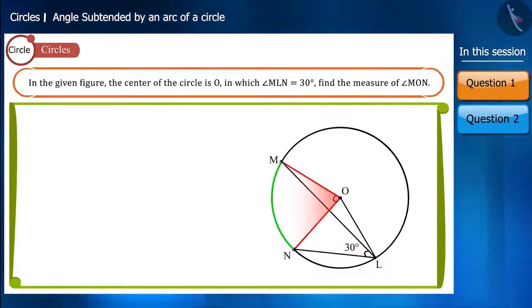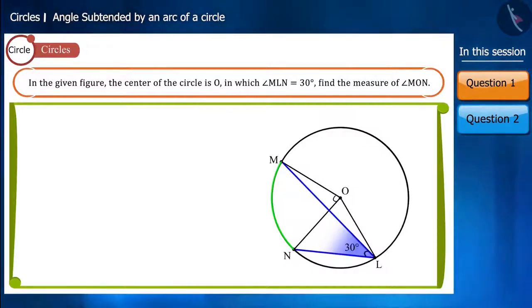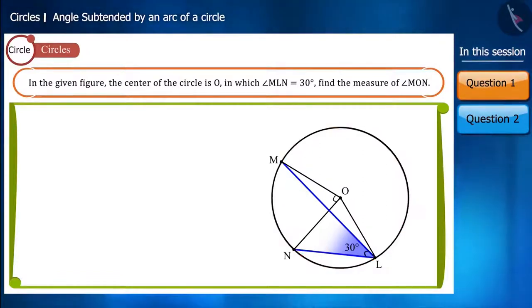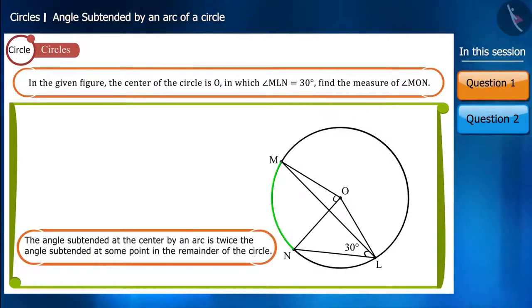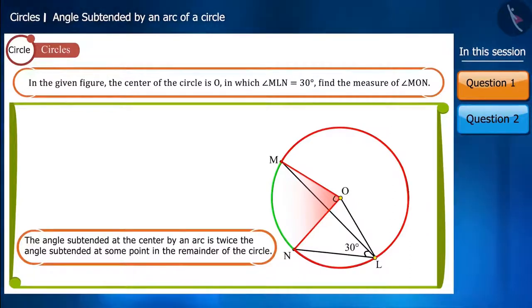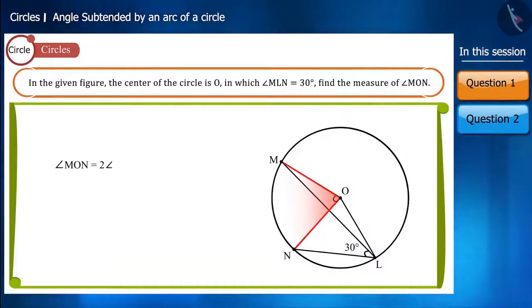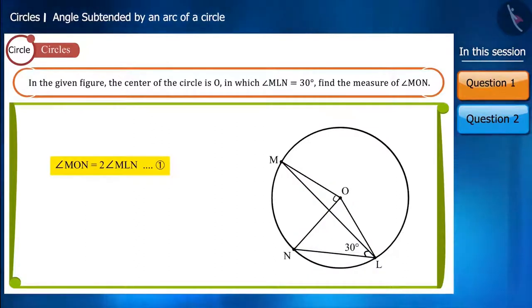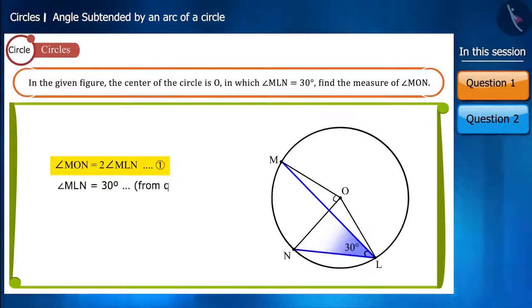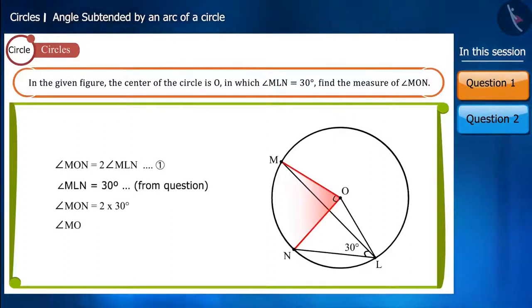The angle MON is the angle subtended at the centre O, and the angle MLN is at the point L on the remaining part of the circle. We know that the angle subtended by an arc at the centre is twice the angle subtended at any point in the remainder of the circle. So the angle MON will be double the angle MLN, giving us angle MON equal to 60 degrees.